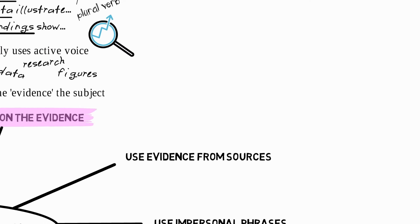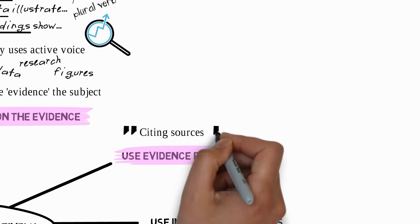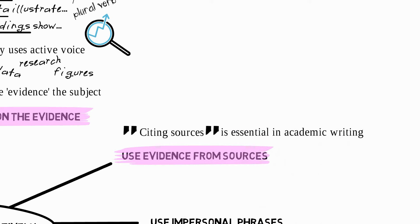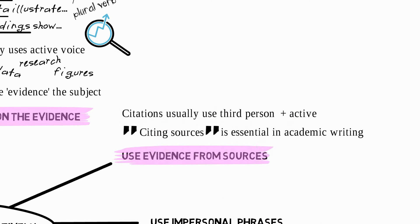Thirdly, use evidence from sources. Citing sources is an essential part of academic writing, and in-text citations usually use the third person, which we saw as a feature of objective writing, and are normally in the active voice.